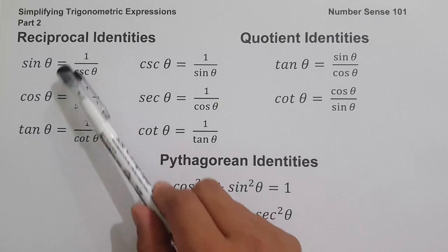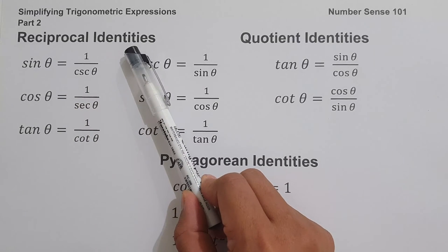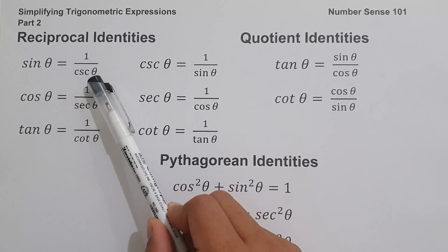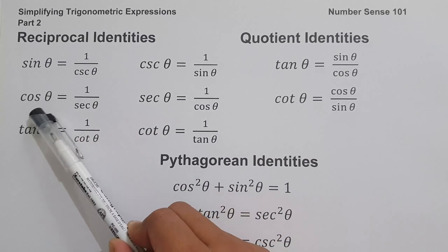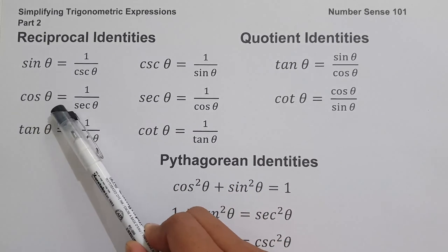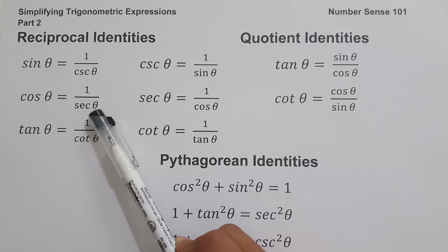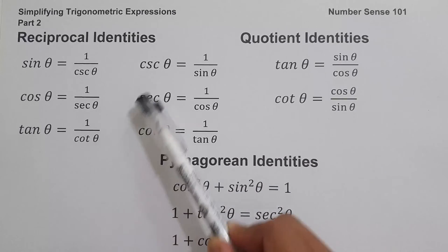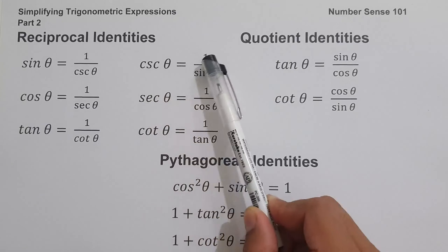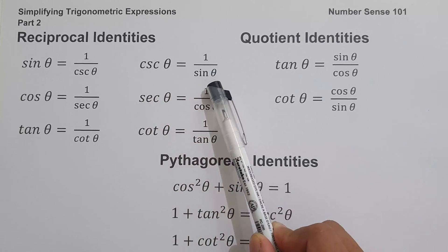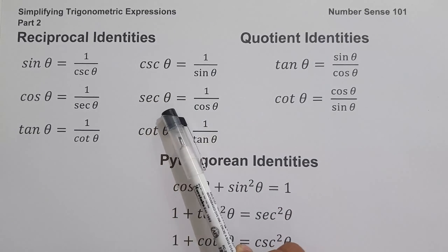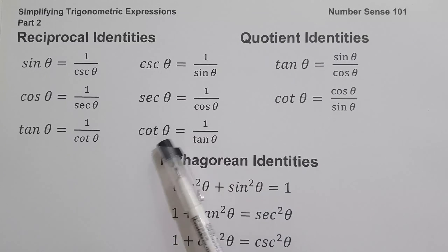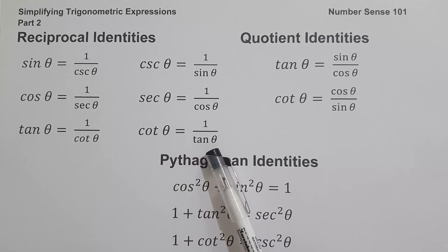The first one is the reciprocal identities. Reciprocal identities consist of: sin θ = 1/csc θ, cos θ = 1/sec θ, tan θ = 1/cot θ, csc θ = 1/sin θ, sec θ = 1/cos θ, and cot θ = 1/tan θ.